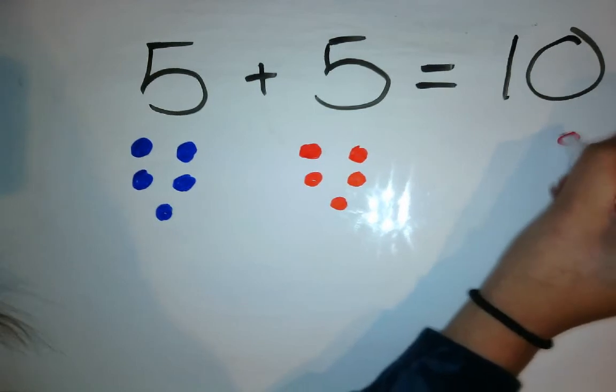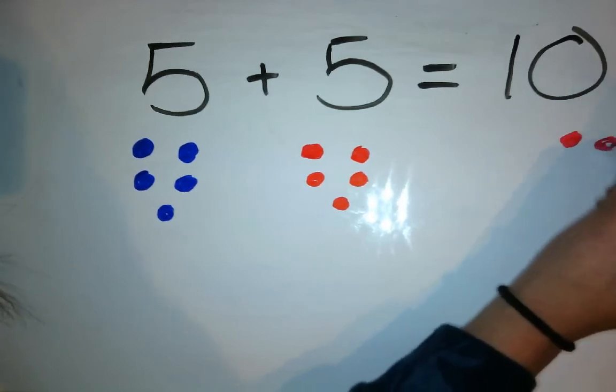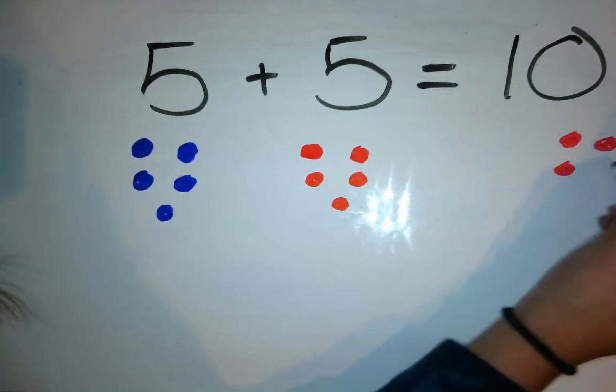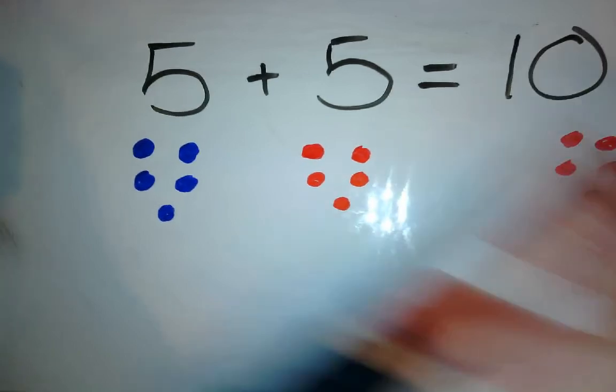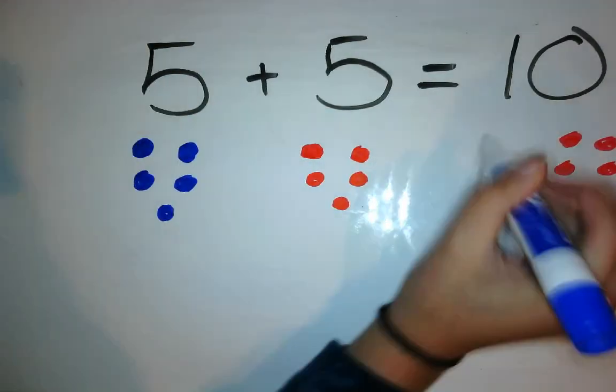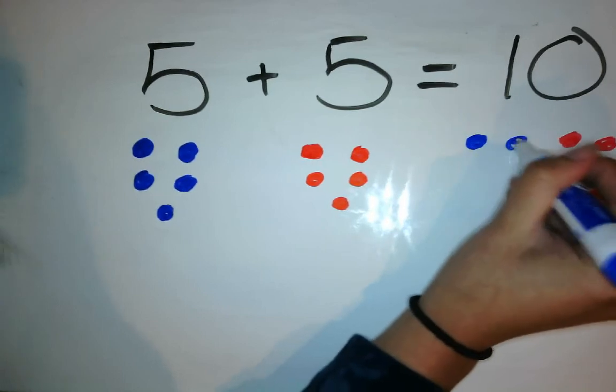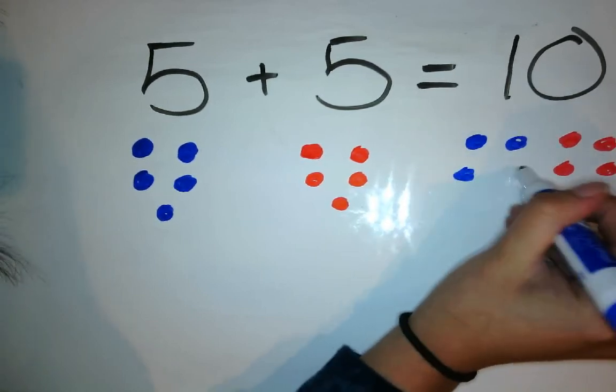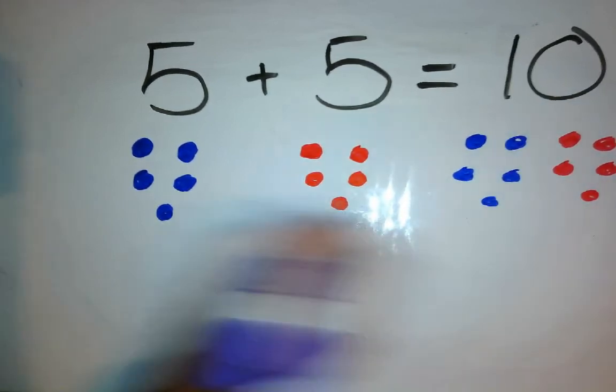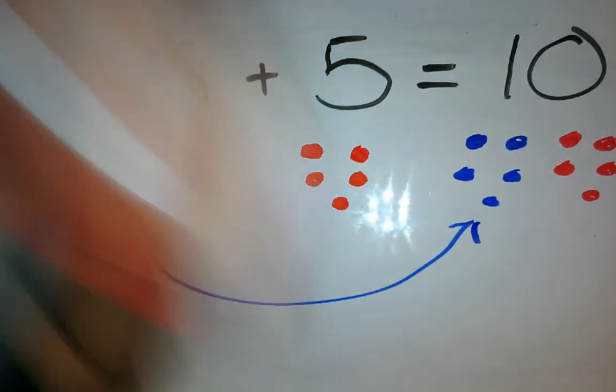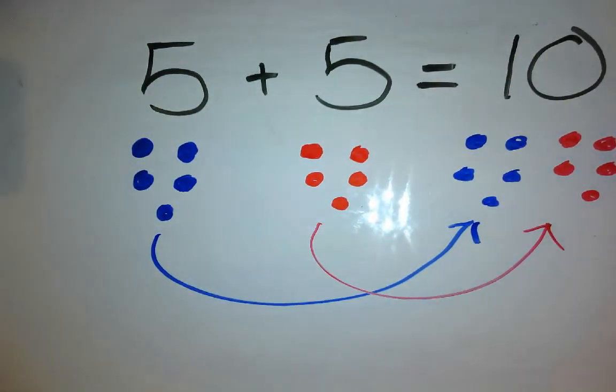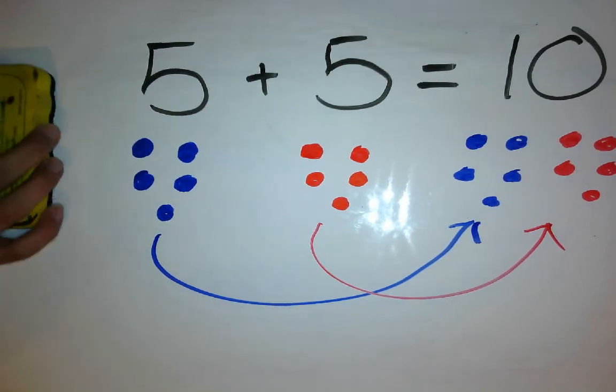So like I did before, we just put our blue and red dots together. That's how we found our answer. Because with adding, you're just seeing how many you have total. So that went there. And that went there. Easy peasy. Alrighty. I hope this helped. If you want to use this strategy or the number line strategy, whichever works best for you.